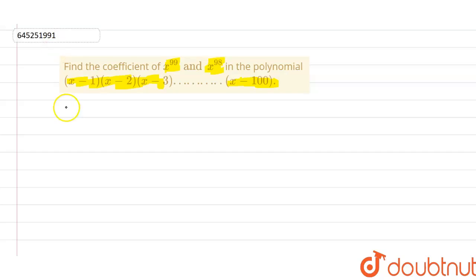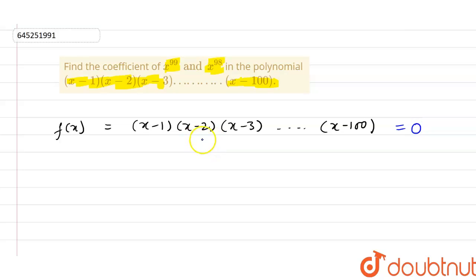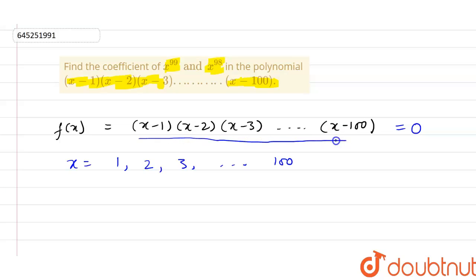First of all, let f(x) be equal to the polynomial (x minus 1) into (x minus 2) into (x minus 3) and up to (x minus 100). If we equate this polynomial, its roots are x equal to 1, 2, 3, and up to 100. We can see that it is a polynomial of degree 100.